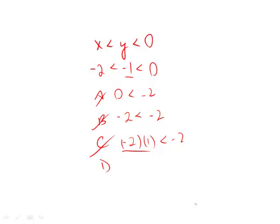D, we have x, which again is negative 2, times y, which is negative 1. Is that less than y squared? What is y squared? Negative 1 squared is 1. This side here is negative 2 times negative 1, which is positive 2. 2 isn't less than 1.